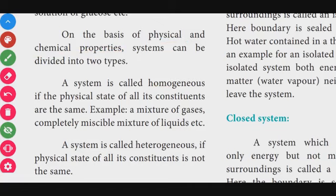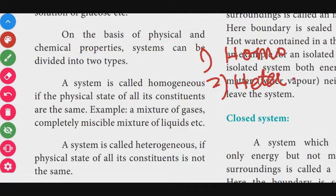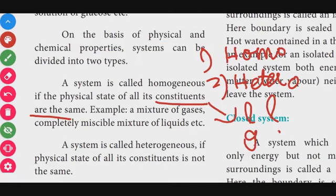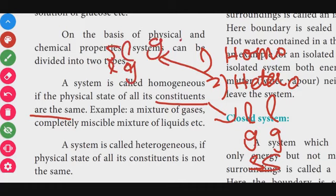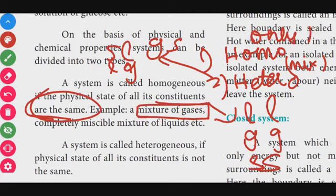Systems can be homogeneous or heterogeneous. In a homogeneous system, all components are in the same state — liquid-liquid, gas-gas, or solid-solid. A heterogeneous system involves mixing of different states: solid-liquid, liquid-gas, or gas-solid. Completely miscible liquids form a homogeneous mixture, while a mixture of gases is also homogeneous because they exist in the same state.